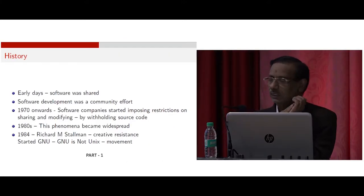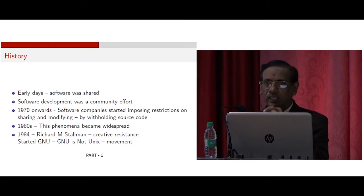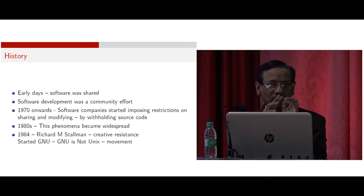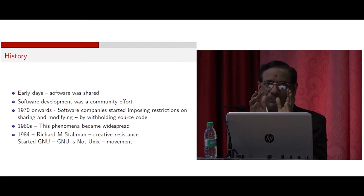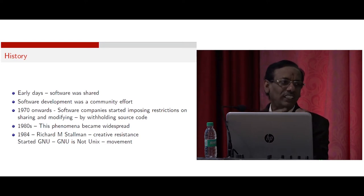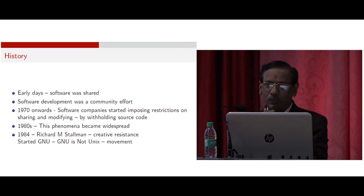If we come to the history of open source software or towards computers, in the early days software was shared. The computer was first invented in 1942-43, around that period — this is the second world war era. During the war, the area of war moved to Africa, and when the military used the guns, they had certain tables for at which angle to fire. These calculations were not working in African conditions because the land is very marshy, so they had to recalculate the tables.